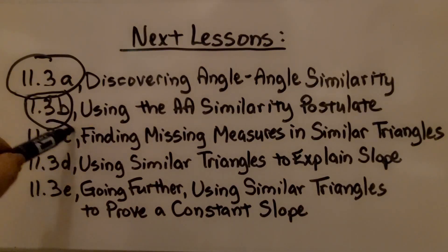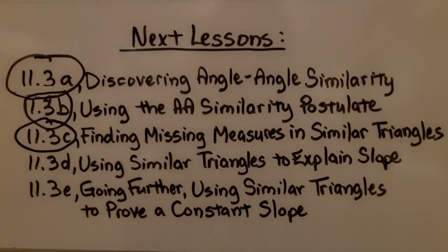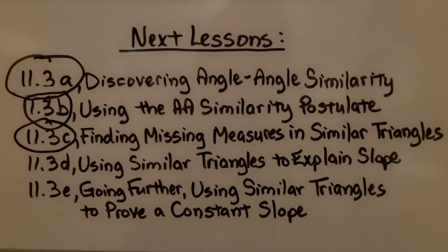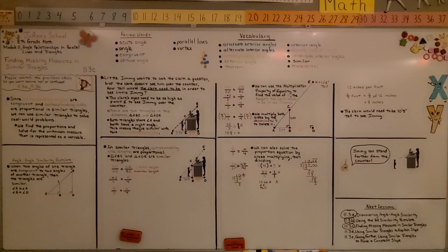We're finished with Part C. We're moving on to D, using similar triangles to explain slope. So to find that unknown measure, we made sure that two triangles were similar, and then we did a proportion equation. If the triangles are not similar, the proportion will not work. Have a great day, and join me for Part D. Bye!